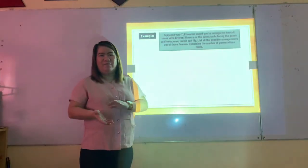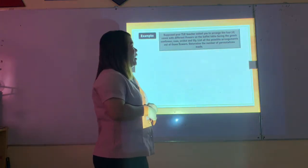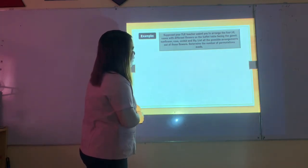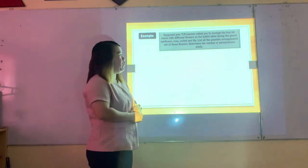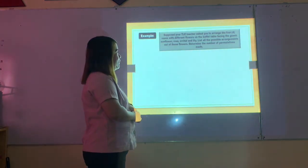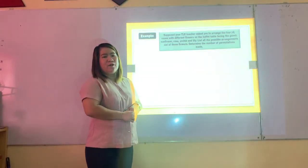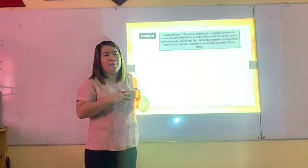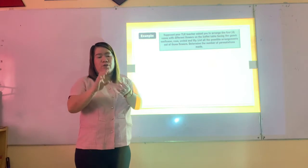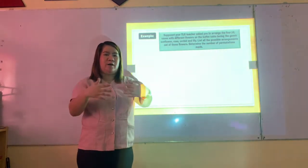Let's have another example. Your TLE teacher asks you to arrange four vases with different flowers on a table facing guests — sunflower, rose, orchid, and baby's breath. List all possible arrangements and determine the number of permutations.